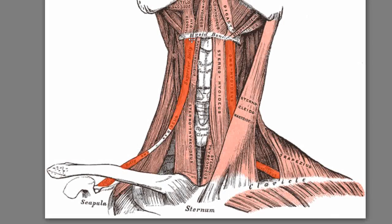Lateral to the sternohyoid, you've got the omohyoid. This muscle originates on the scapula — the superior border of the scapula, just medial to the suprascapular notch. It runs through the posterior triangle into the anterior triangle and inserts onto the hyoid bone. This muscle depresses and fixes the hyoid bone. It's got two bellies — a superior belly and an inferior belly — with an intermediate tendon. There's actually a little fascial sling which attaches the intermediate tendon to the medial end of the clavicle, and that separates the inferior belly from the superior belly of the omohyoid.